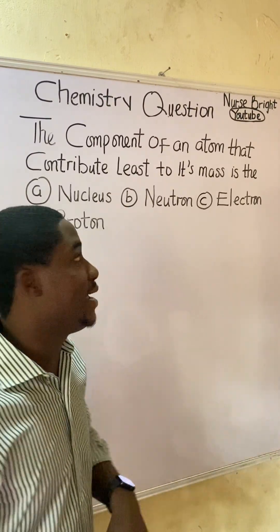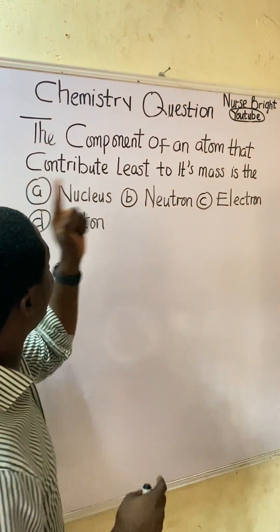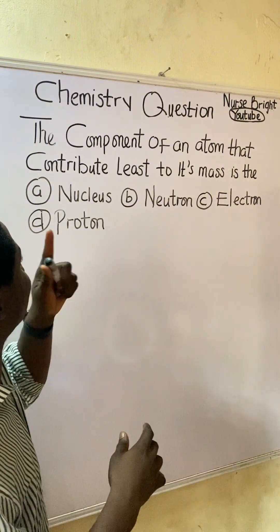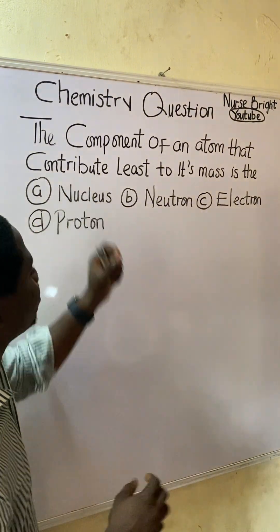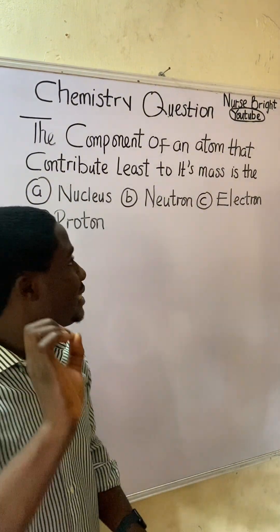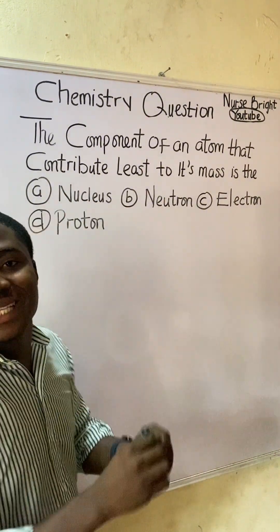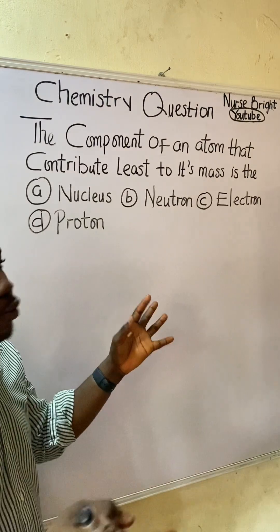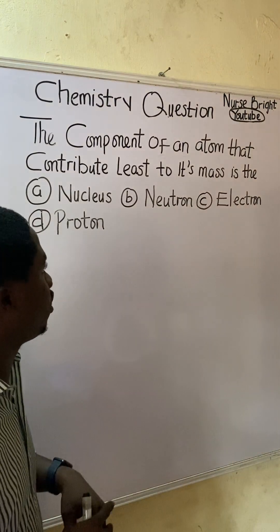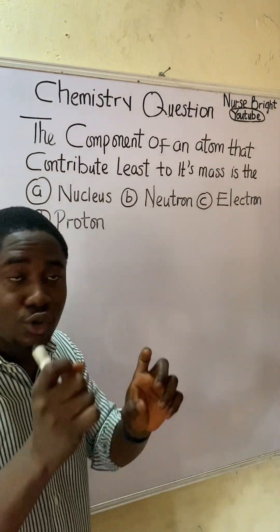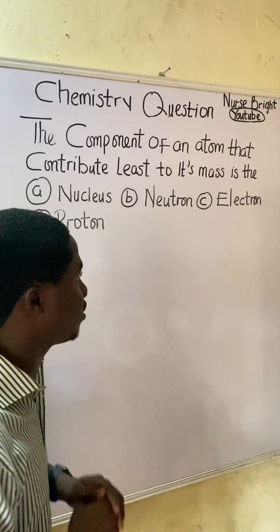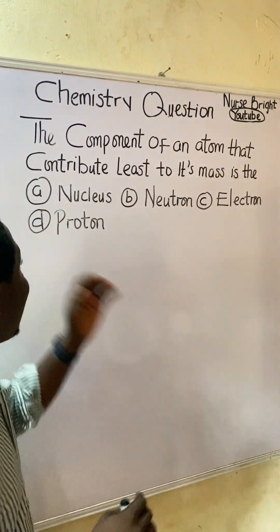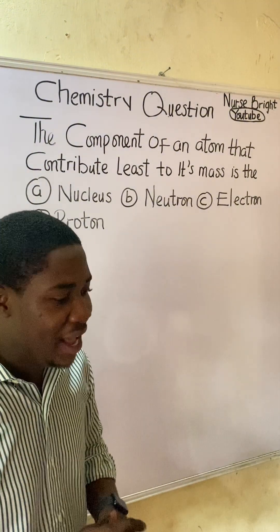The question says: the component of an atom that contributes least to its mass is — option A: nucleus, option B: neutron, option C: electron, and option D: proton.